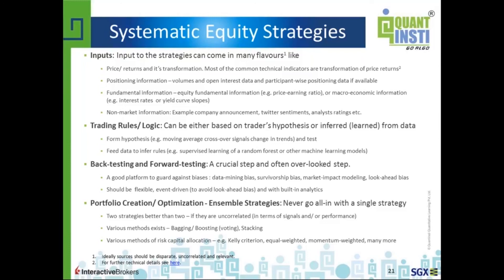An ideal backtesting platform should avoid most of these biases. Of course, the platform cannot avoid all of them — some must be controlled by the human behind it. But it should be flexible and event-driven, because an event-driven backtester avoids lookahead bias. It should also come with built-in analytics, because getting the P&L alone is not enough — you need to estimate the risk you are taking for that P&L, and understand how the backtest performance might change, and in what scenario a currently working strategy might stop working. This is a very critical part of backtesting.